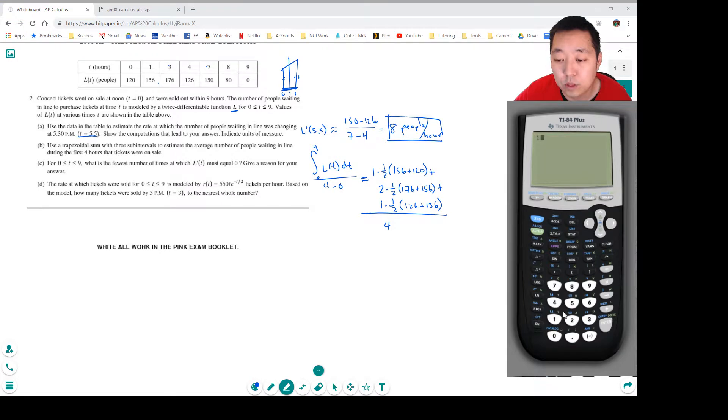So we're going to do 156 plus 120 divided by 2, plus 176 plus 156, plus 126 plus 156 divided by 2. That's the sum and now I divide all that by 4. So this equals 152.75 people. So that's the average number of people.